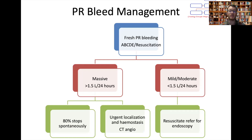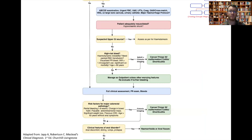Mild to moderate bleeds are less than one and a half litres a day — these are the ones we want to resuscitate and manage and then do an endoscopy on in time. Remember this is over 24 hours, so be wary of slow but consistent bleeders who may actually be in the massive blood loss group. In the acute stage, do an A-to-E assessment, ensure you have bloods including an FBC and cross-match, site large bore cannulas, and consider the major haemorrhage protocol.